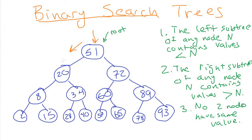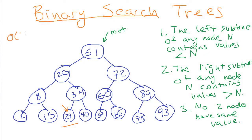That moves us down to node 20. We compare 28 to 20, and since 28 is bigger than 20, what we're looking for has to be in the right subtree of 20. Now we're on the 34 node looking for 28, which is less than 34, so it has to be in the left subtree. We move down and find the thing we're looking for. The goal of binary search trees is to run the binary search algorithm, which is O(log n). We'll return to the analysis for binary search trees specifically later this week.